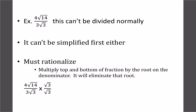If we look at 4√14 over 3, we can't divide them — 4 doesn't divide by 3, and 14 over 3 doesn't work — and we can't simplify. Sometimes simplifying will make it work, but in this case we have to rationalize. To rationalize, we want to get rid of the square root on the bottom. We just pick whatever root is in the denominator.